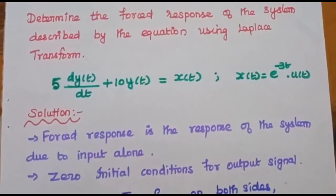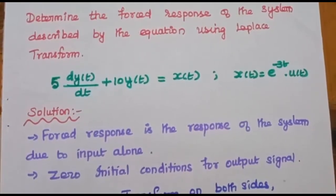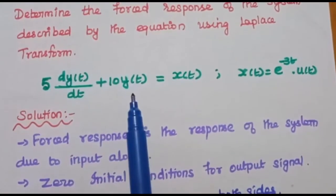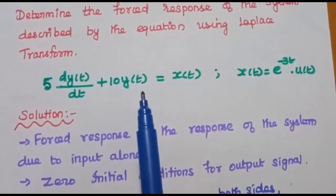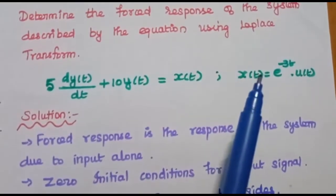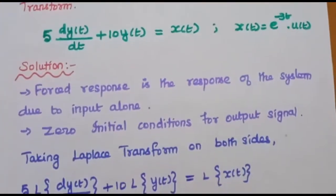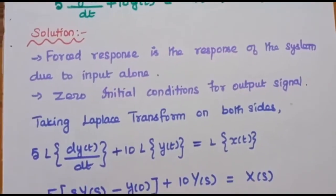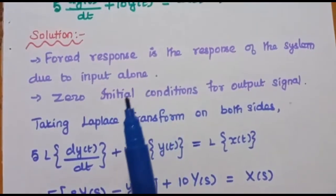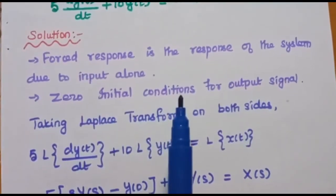The next problem is to determine the forced response of the system described by the differential equation using Laplace transform. The given equation is 5 dy of t by dt plus 10 y of t is equal to x of t. The input signal is given as x of t is equal to e power minus 3t times u of t. Forced response is the response of the system due to input alone, and here we consider zero initial conditions for the output signal.